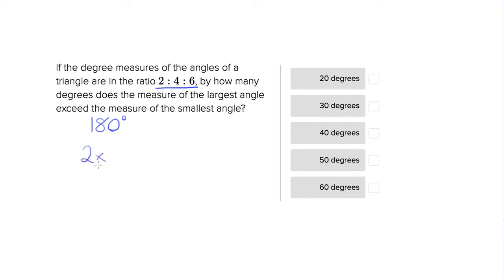So we can say 2x, so x is a degree of an angle, plus 4x plus 6x is all going to add up to 180. So why don't we solve for x so we're not working in abstracts? So we can say 12x equals 180, and let's divide by 12, x equals 15.